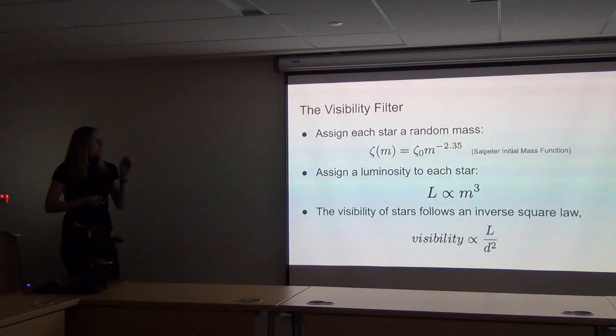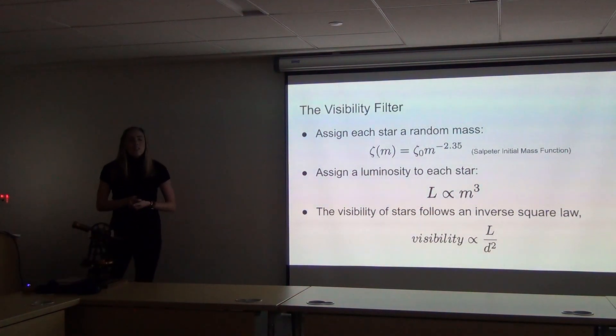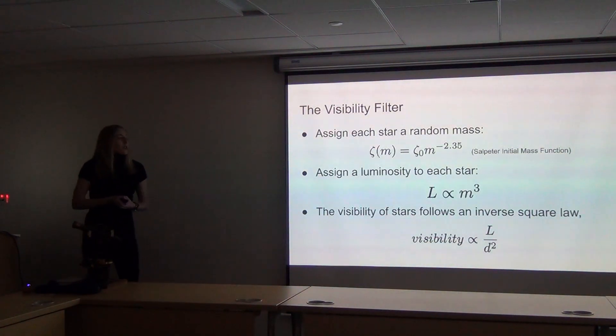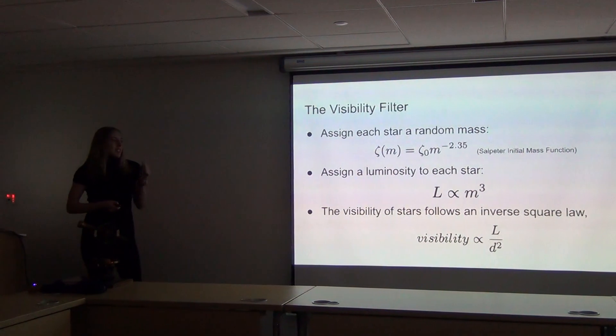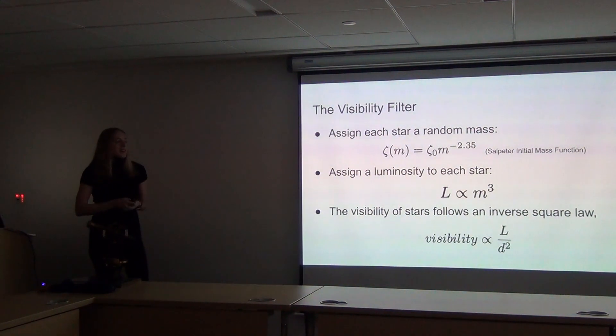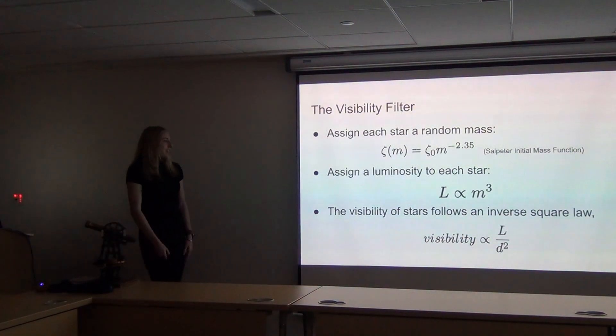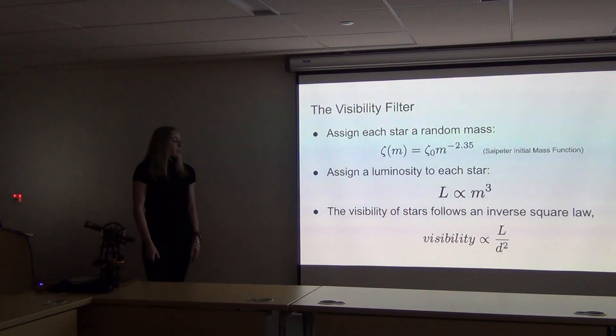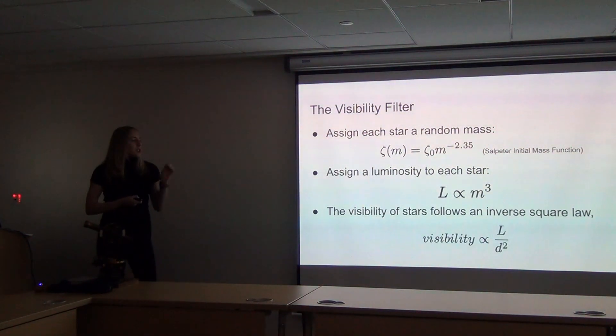I won't go into too much detail, but the idea here is that we filter out stars that are too far for Gaia to see or too faint for Gaia to see. So we generated a random mass and assigned it to each star following this power law called the Salpeter Initial Mass Function. And then we scaled that, we cubed the mass to get kind of a luminosity value. And then basically, we combined luminosity with the distance which we get from the coordinate transformation, and we could filter out those stars that just aren't visible.